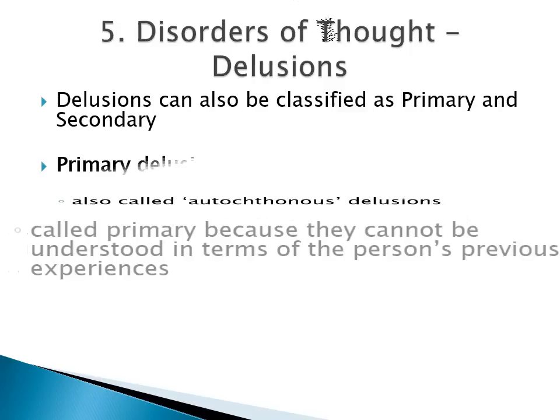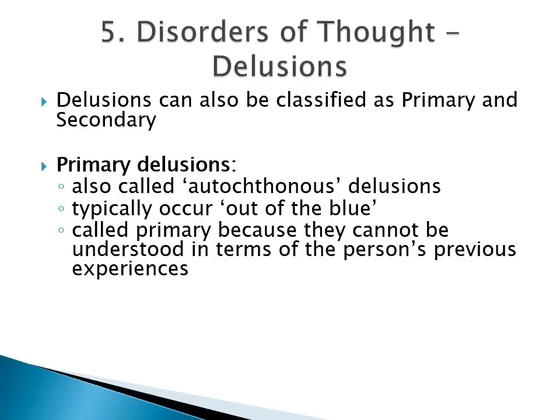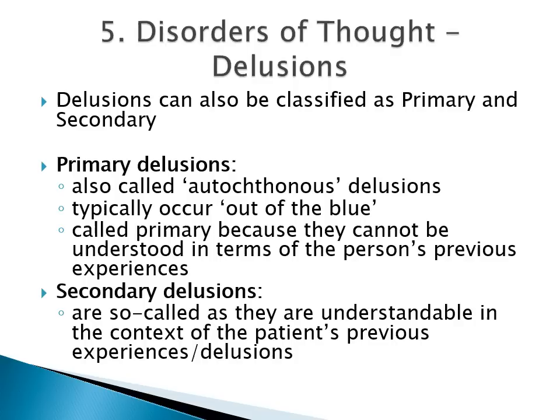Delusions can also be classified as primary and secondary. Primary delusions are also called autochthonous delusions and typically occur out of the blue — they are called primary because they cannot be understood in terms of the person's previous experiences. On the other hand, secondary delusions are understandable in the context of the patient's previous experiences or already existing delusions.